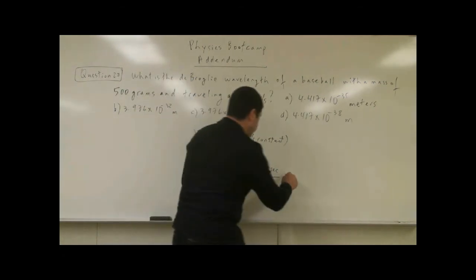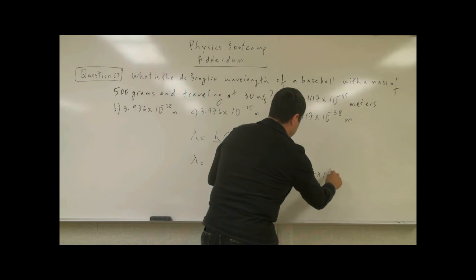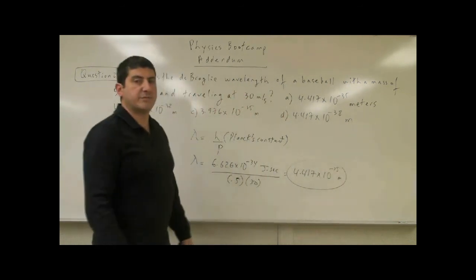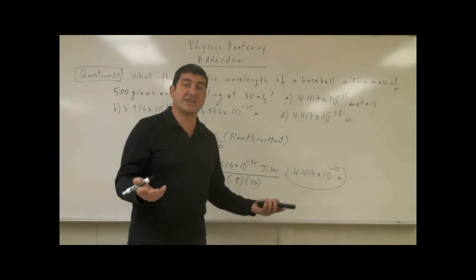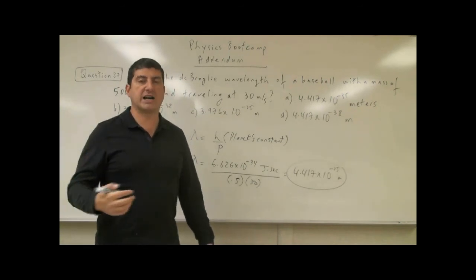That gives you 4.417 times 10 to the minus 35 meters. So that is the wavelength of the baseball. The heavier and faster an object is going, the smaller its wavelength is, and it becomes a more localized wave and its wave properties are less noticeable.